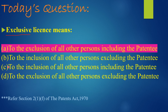That's why options B and C will not come into the picture. Now, between A and D, we have to find out the answer. Option A says 'to the exclusion of all other persons including the patentee' — that means the patentee is also included here, meaning the patentee is also excluded.